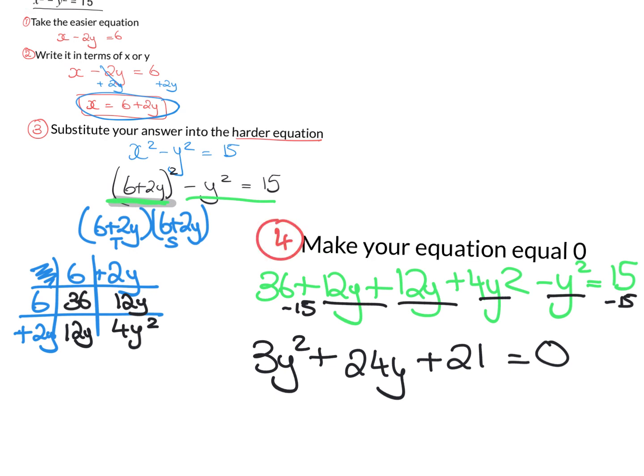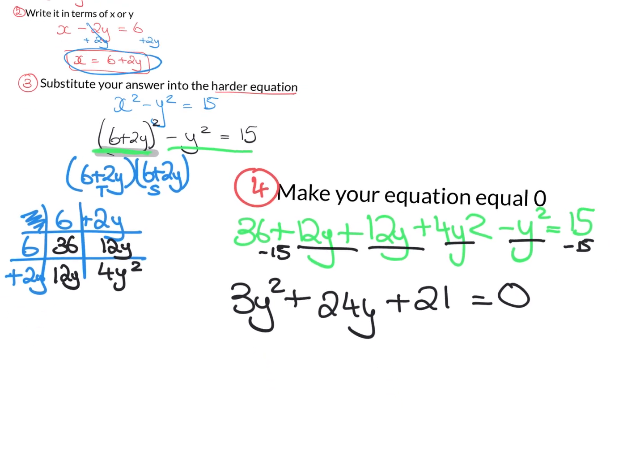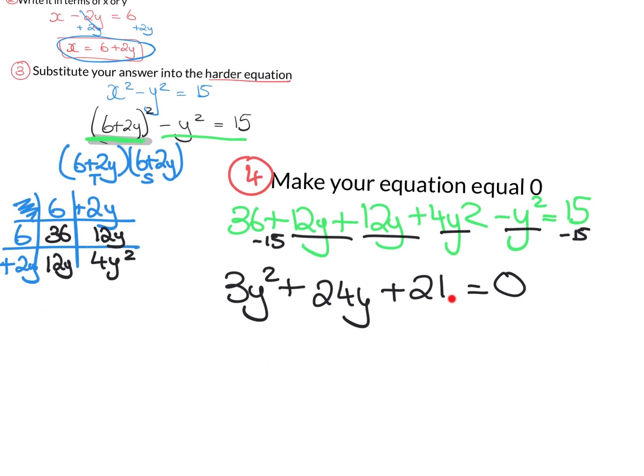So this is a quadratic, but generally we can make them a little bit easier by ourselves by dividing across by something. So I can see here that everything, all of these 3, 24 and 21 is a multiple of 3. So I'm going to divide everything by 3. Because remember in maths, once you do it to everything, it's totally fine. So if I divide this by 3, I'm going to get y squared plus 8y plus 7. And now you can see here we have a quadratic.